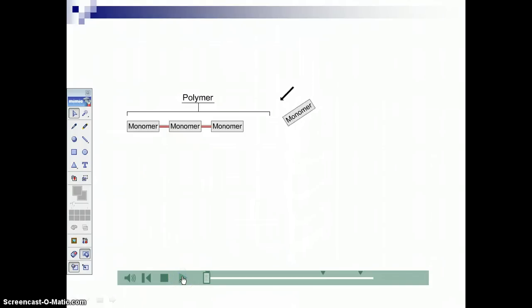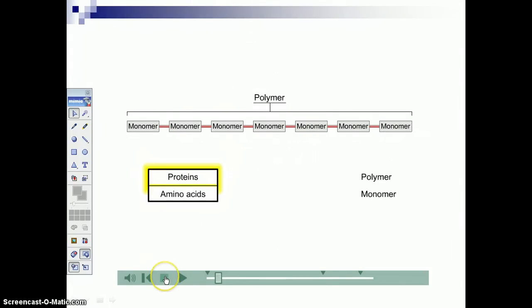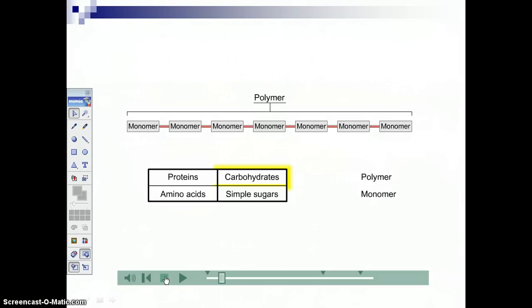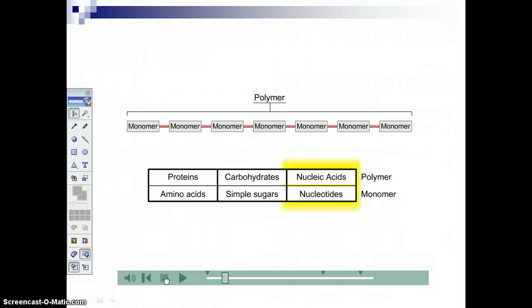Many important biological molecules are made up of repeating subunits. Such molecules are called polymers, meaning many parts, and their subunits are called monomers, meaning one part. For example, proteins are composed of amino acids, complex carbohydrates are composed of simple sugars, and nucleic acids are composed of nucleotides.